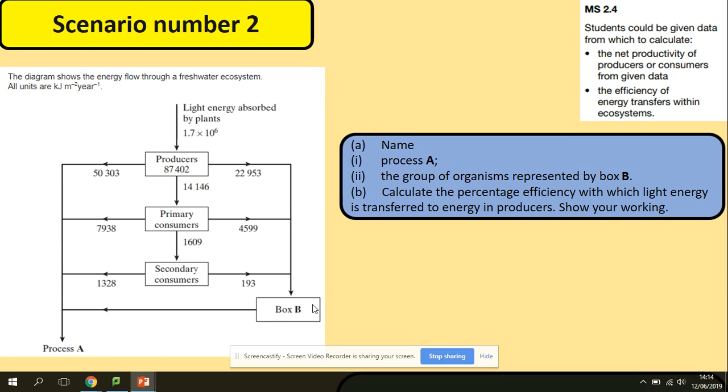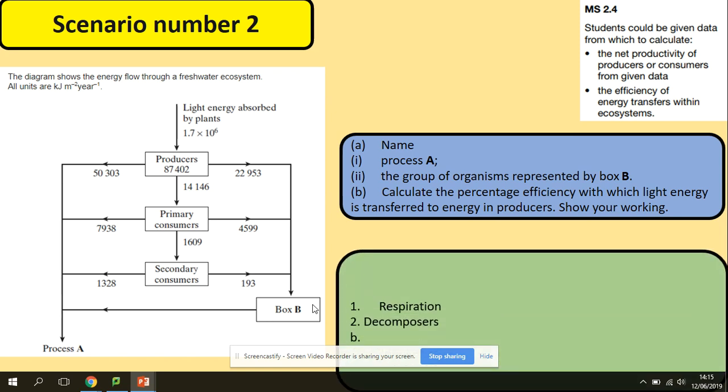Firstly, let's get the names of the processes. We've got respiration here, because we remember that any loss, we're losing energy, which is lost for respiration. B, those are decomposers, because anything that will die out will be then processed by decomposers.